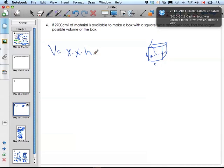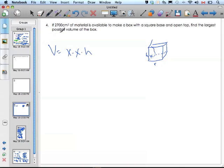And so I have too many variables now. I have to take my variables and get rid of one of them. The one thing I know is that I got 2,700 centimeters squared as my surface area. Well, if I think about my box, it's an open top.